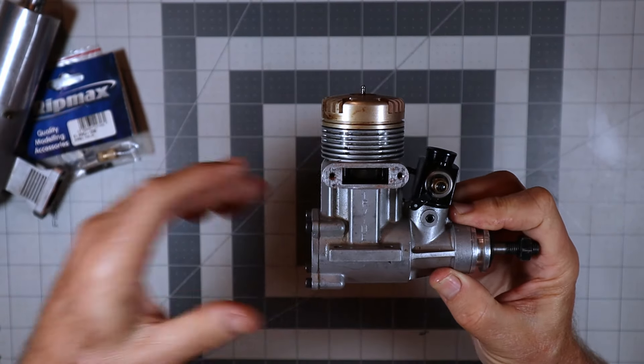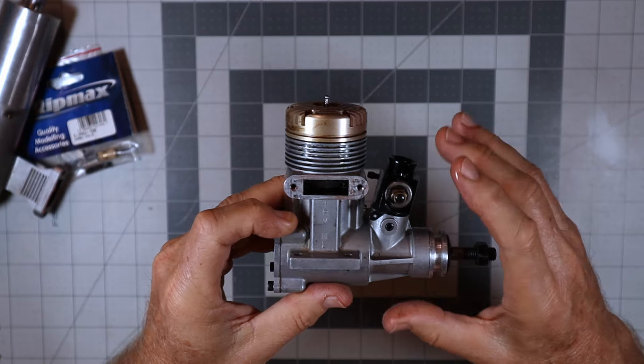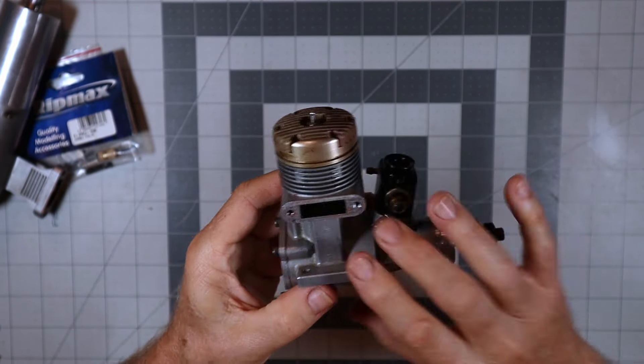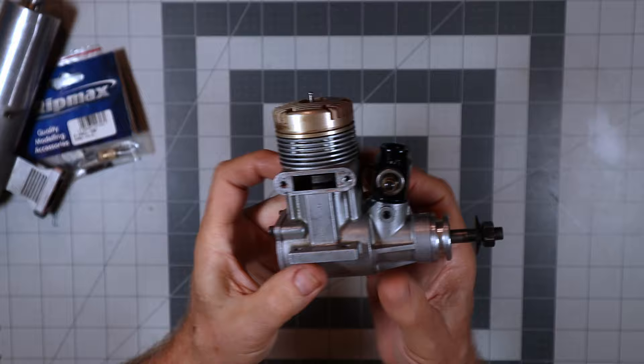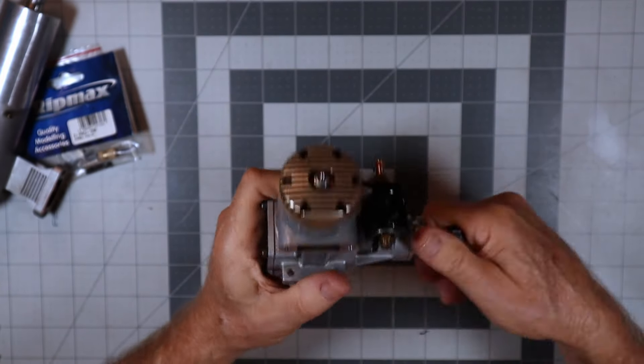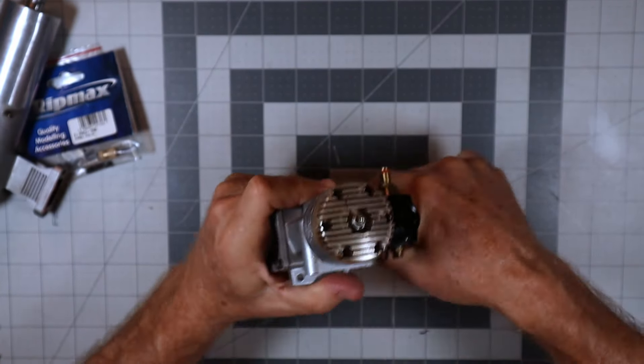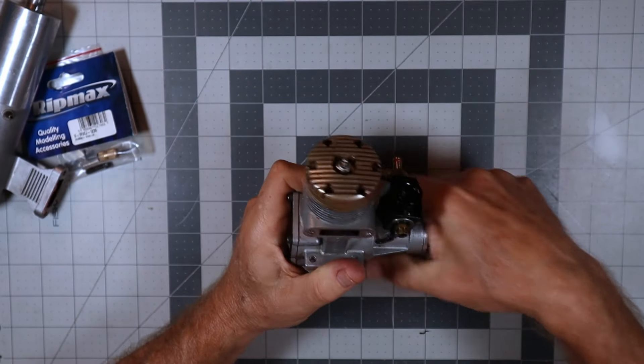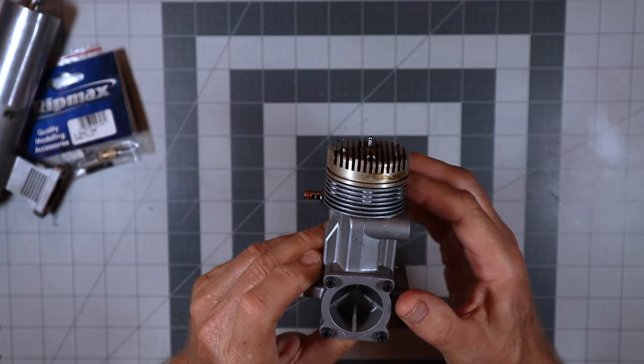You know I would say it looks very similar to OS SF series where it's a single piece casting, it doesn't have the detachable front housing. It's got, just by my greasy hand and trying to turn this prop hub over, I can't turn it over, so it's got incredible compression.